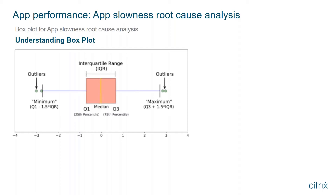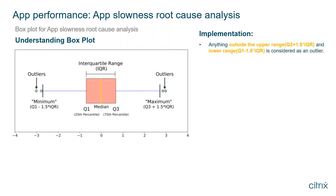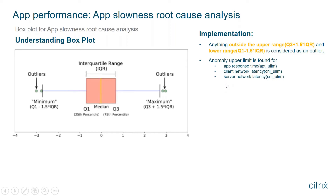We use the box plot methodology. Consider different data points of an application's response time plotted on a box plot: Q1 is the first quartile, Q3 is the third quartile. The minimum value is defined as Q1 minus 1.5 times the interquartile range (IQR = Q3 - Q1), and the maximum is Q3 plus 1.5 times IQR. Anything falling outside the minimum or maximum is an outlier. We find the upper limit for response time, client network latency, server network latency, and server processing time.